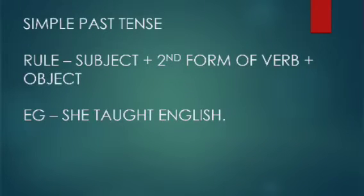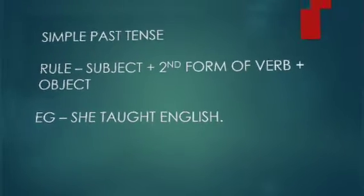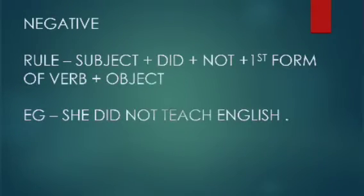Simple Past Tense: Subject plus second form of verb plus object. Example: She taught English. Negative: Subject plus did plus not plus first form of verb plus object. Example: She did not teach English.